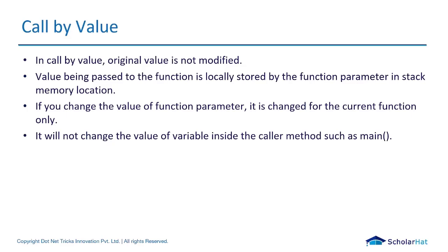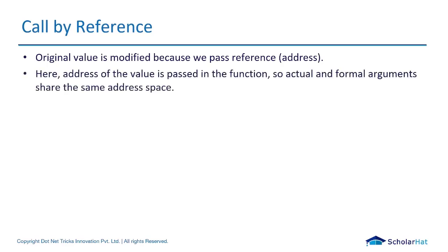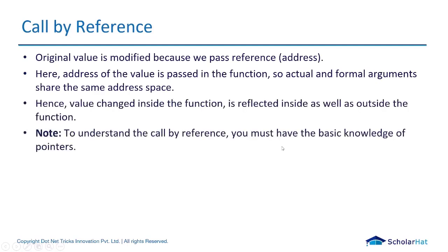Call by value and call by reference are the two methods we use to pass arguments to a function. In call by reference, the original value is modified because we pass by reference or pass by address — both are the same thing. Here, the address of the value is passed in the function, so actual and formal arguments share the same address space. Hence, the value change inside the function is reflected outside the function as well. To understand call by reference, you must have basic knowledge of pointers, which will be covered in detail later in the course.